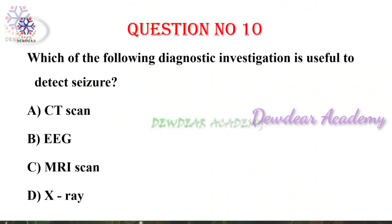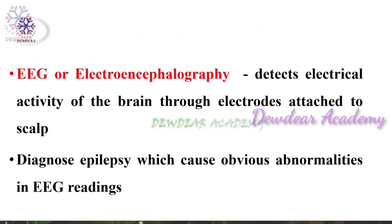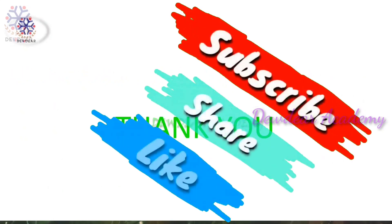Question number ten: Which diagnostic investigation is useful to detect seizure — options: CT scan, EEG, MRI scan, X-ray. The right answer is EEG. EEG or electroencephalography detects the electrical activity of the brain through electrodes attached to the scalp, and it helps to diagnose epilepsy which may cause obvious abnormalities in EEG readings. So EEG helps in diagnosing seizures. Thank you for watching the video.